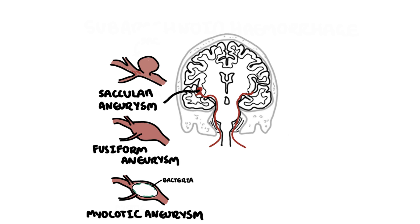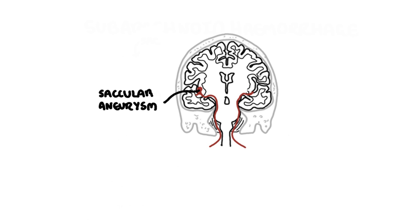Other causes of subarachnoid hemorrhage aside from an aneurysm include occult trauma, arteriovenous malformations or fistula, vasculitides, intracranial arterial dissection, amyloid angiopathy, bleeding diathesis, and illicit drug use — especially the use of sympathomimetics such as cocaine and amphetamines. We will focus on the most common cause of subarachnoid hemorrhage, which is from an aneurysm.